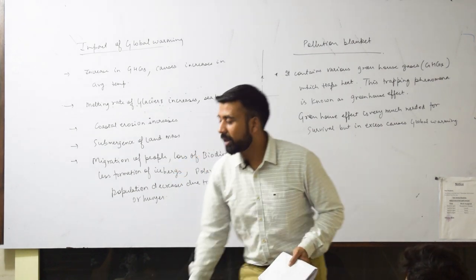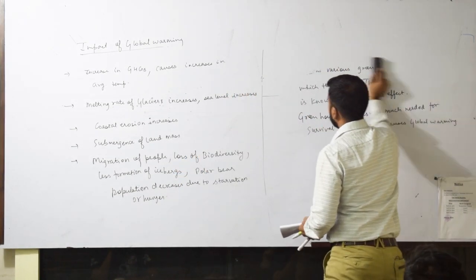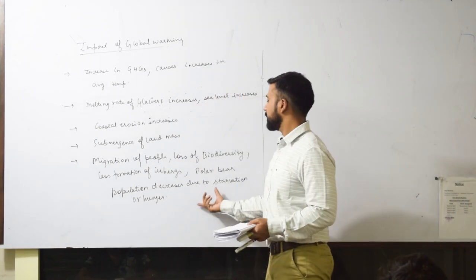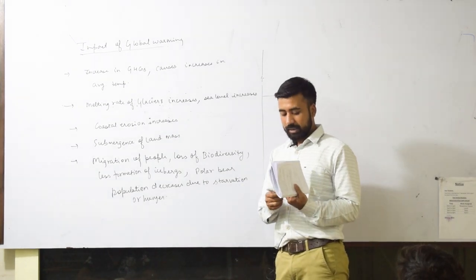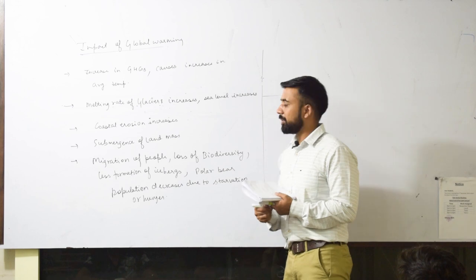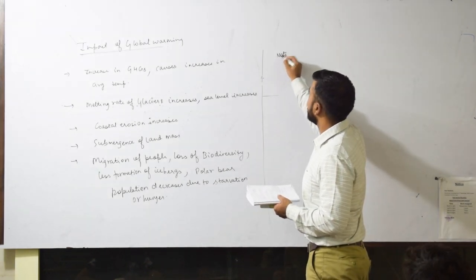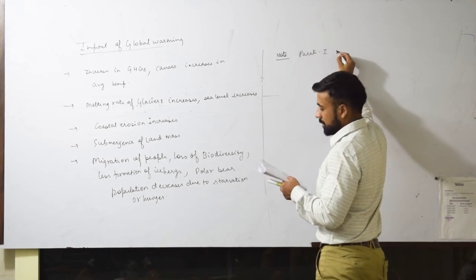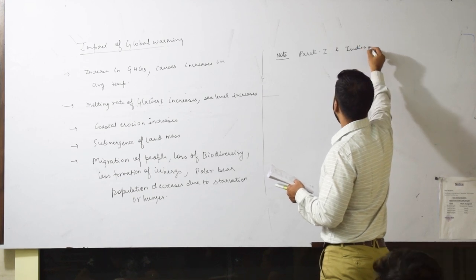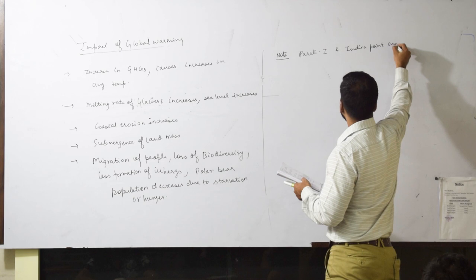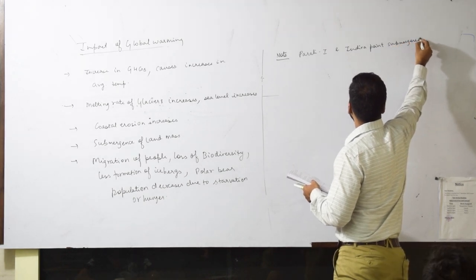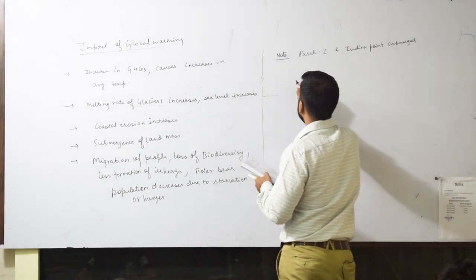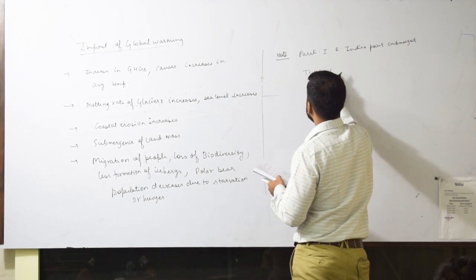I am writing one last point which you must see in the atlas because I will ask you on Monday. Now starvation - to eat they basically have fish, seals. I'm writing in notes. I told you about Indra Point. You have to tell me where Parali-I and Indra Point are submerged. Apart from that, Tuvalu. Tuvalu, you should check this in the atlas.